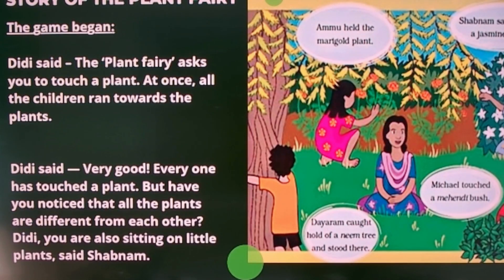This is a story — the story of a plant fairy. Here are some children; they are all playing in a garden. There is one elderly girl sitting in the center; they call her Dili. Let us look at what this story is all about.